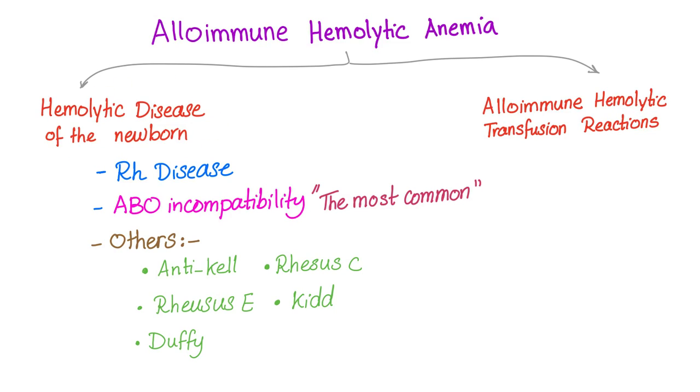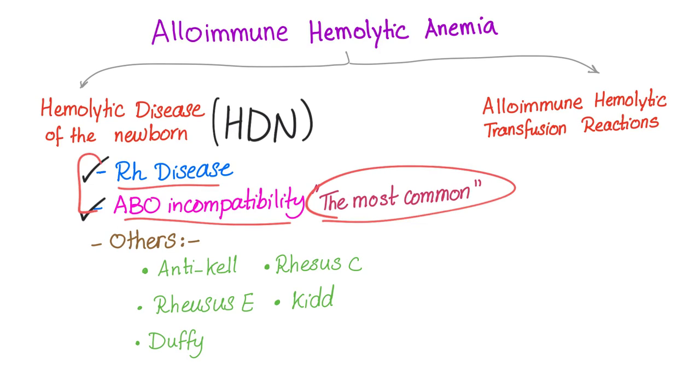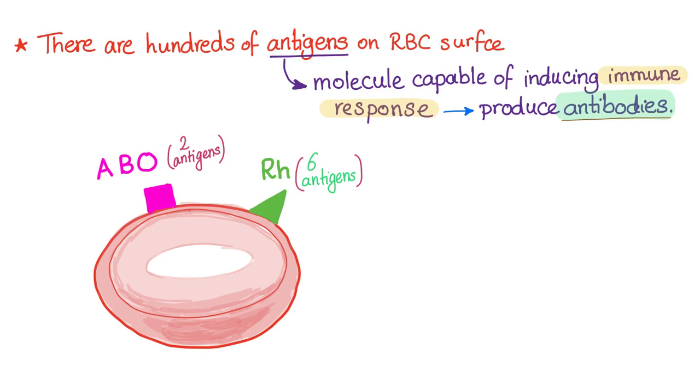Alloimmune hemolytic anemia is subdivided into hemolytic disease of the newborn and alloimmune hemolytic transfusion reaction. Of the hemolytic disease of the newborn, or HDN, we have RH disease and ABO incompatibility. Of the two, ABO incompatibility is more common, but RH is more severe. Here is your nice red blood cell. There are literally hundreds of antigens on the red blood cell surface. ABO system and the RH system are two separate groups of antigen. Today's topic is ABO system.